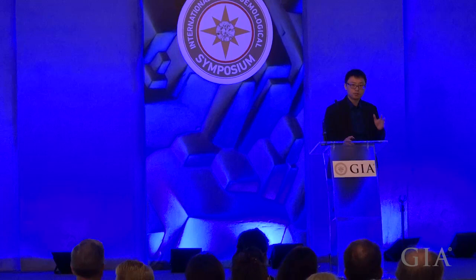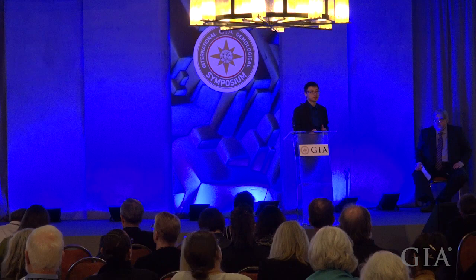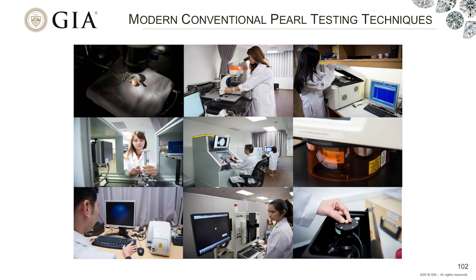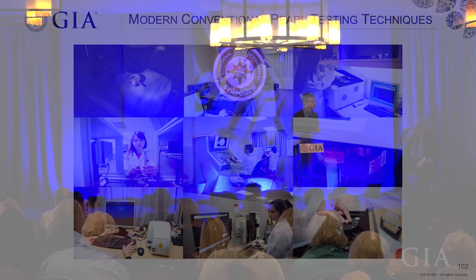Before I jump into these unconventional techniques, I'd like to give you a summary on conventional techniques that are currently being employed in the lab for pearl testing. This group of pictures were mostly taken in GIA's Bangkok lab. Routinely used pearl testing techniques include microscopic examination, long-wave and short-wave UV fluorescence observation, X-ray imaging techniques such as X-ray radiography and microcomputed X-ray tomography, UV-based spectroscopy, Raman spectroscopy, Raman photoluminescence, EDXRF, and X-ray fluorescence observation.